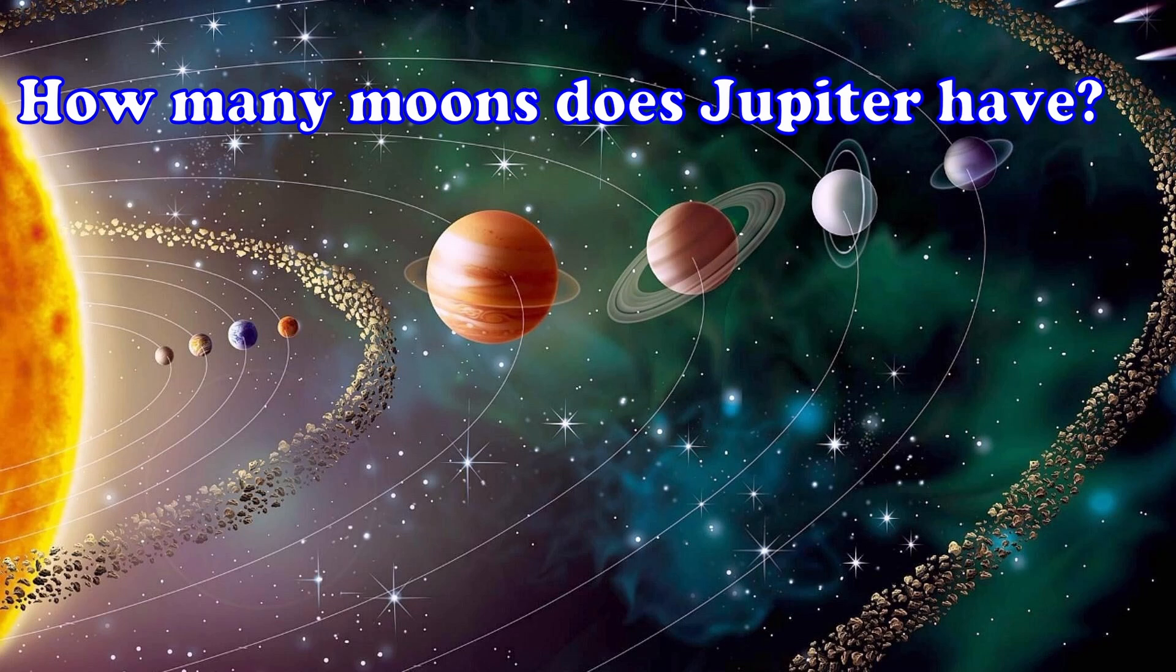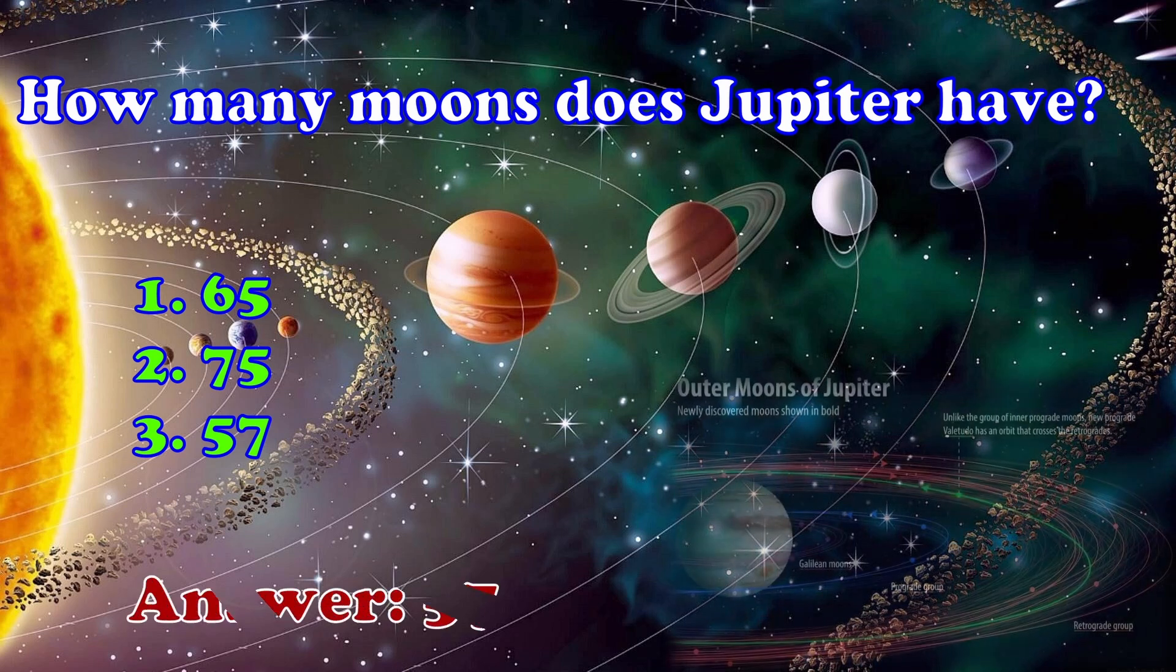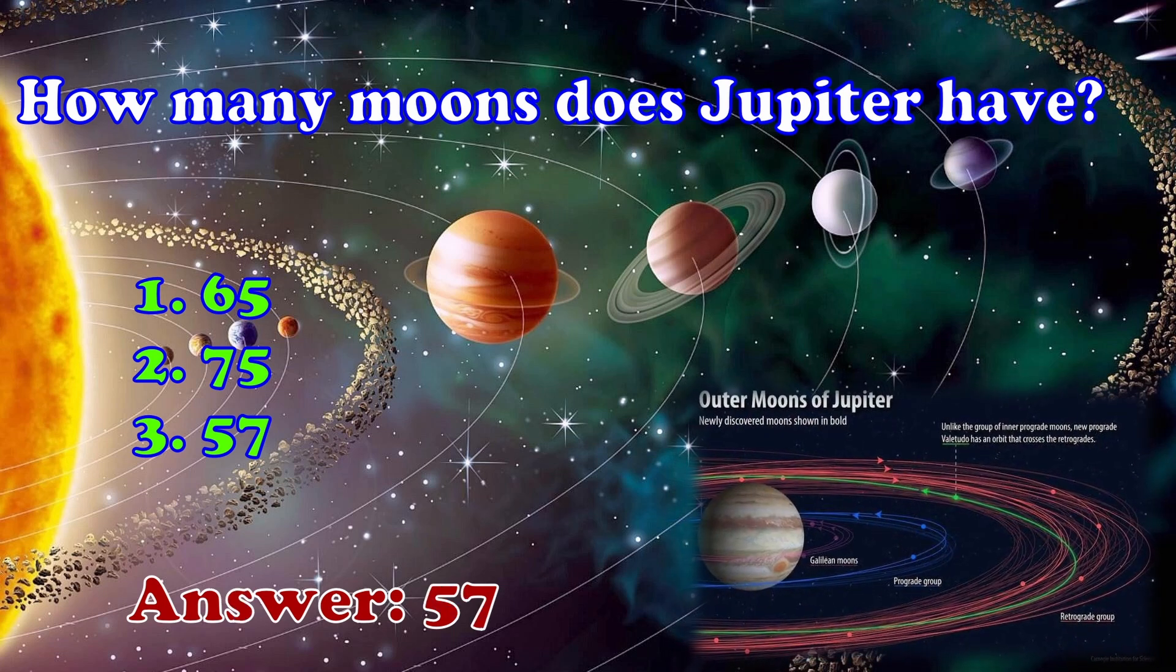How many moons does Jupiter have? 1. 65, 2. 75, 3. 57. The answer is 57.